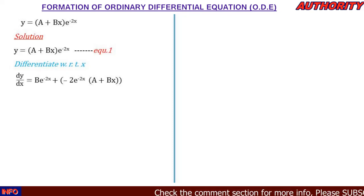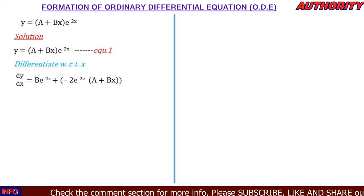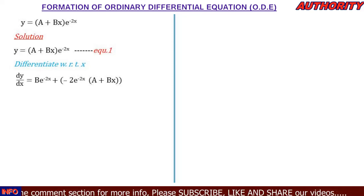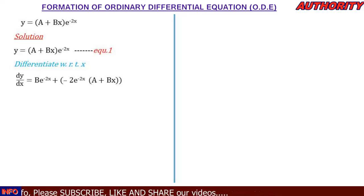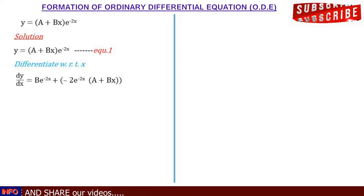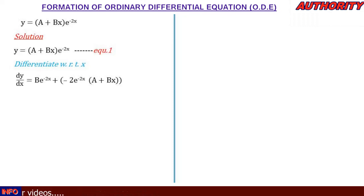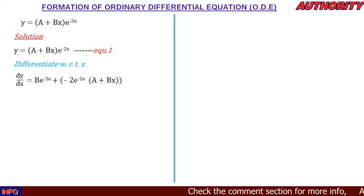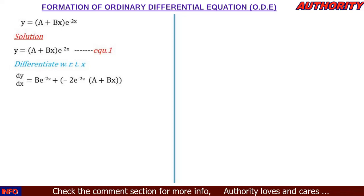I want you to try the product rule yourself and verify this result. Remember: for a product uv, you differentiate v and multiply by u, then add differentiate u multiplied by v. Here u = (a + bx), so differentiating gives b, multiplied by e^(-2x). Then differentiating e^(-2x) gives -2e^(-2x), multiplied by (a + bx).